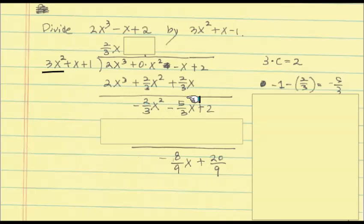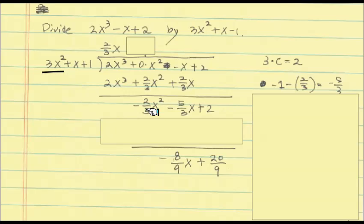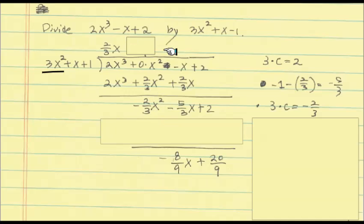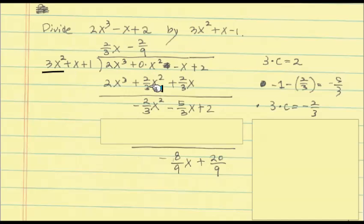At this stage, we look at this new dividend. If its degree is less than the degree of the divisor, we stop. In this case the degree is the same, so we do one more step. Since the degree is the same, we need just a constant. We ask: 3 times what gives negative 2/3? So c is negative 2/9. If you multiply negative 2/9 to the leading term 3x², you get negative 2/3, which matches.